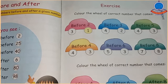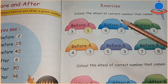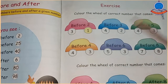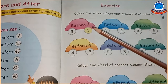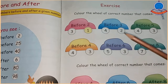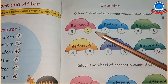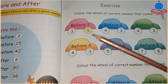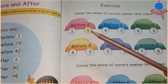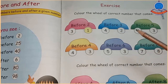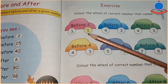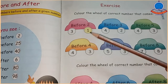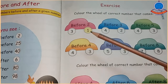Students, come to page number 55, Exercise. Color the wheel of the correct number that comes before. यहाँ पर आपको colorful cards नज़र आ रही हैं। Before 2 — 2 से पहले क्या आता है? 1 आता है, इसलिए 1 के circle पर color किया हुआ है।